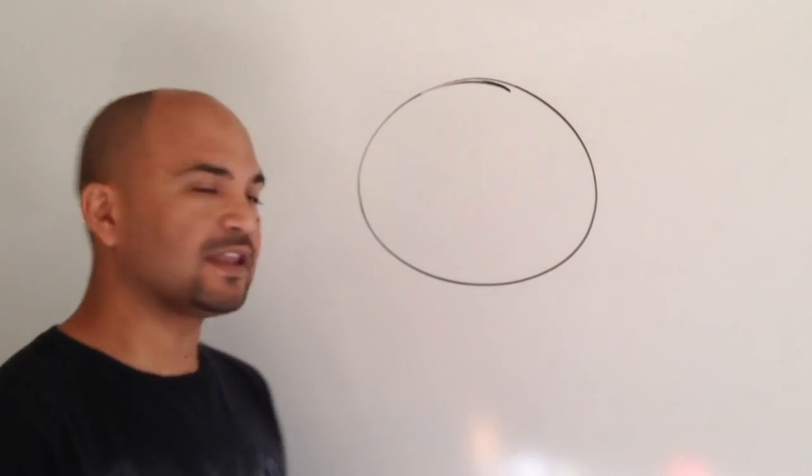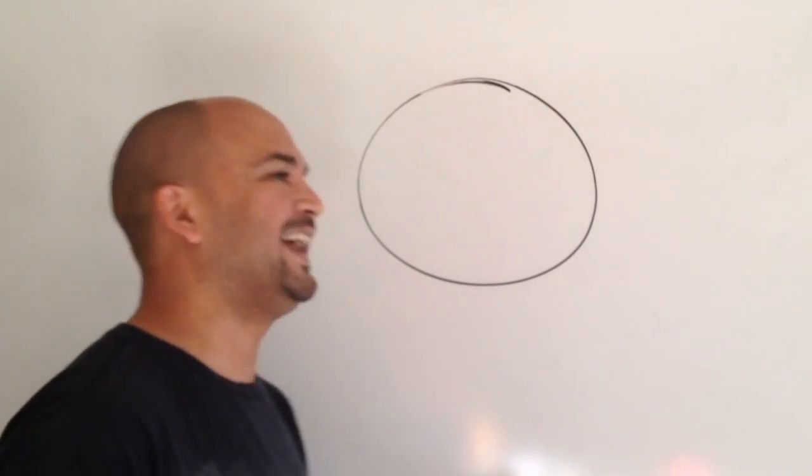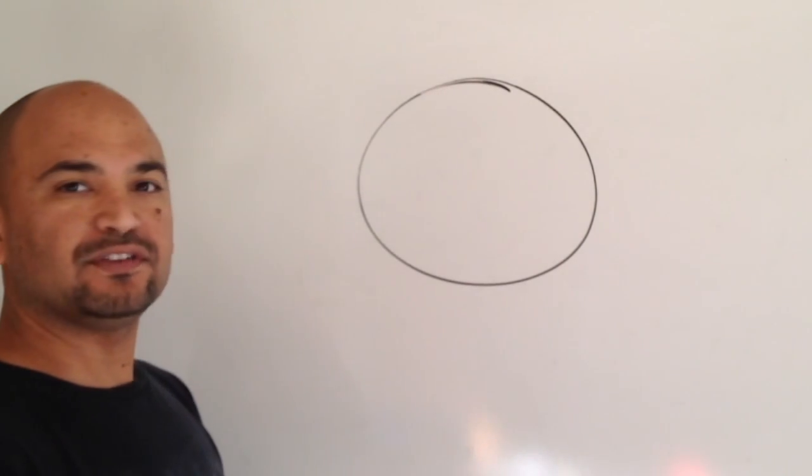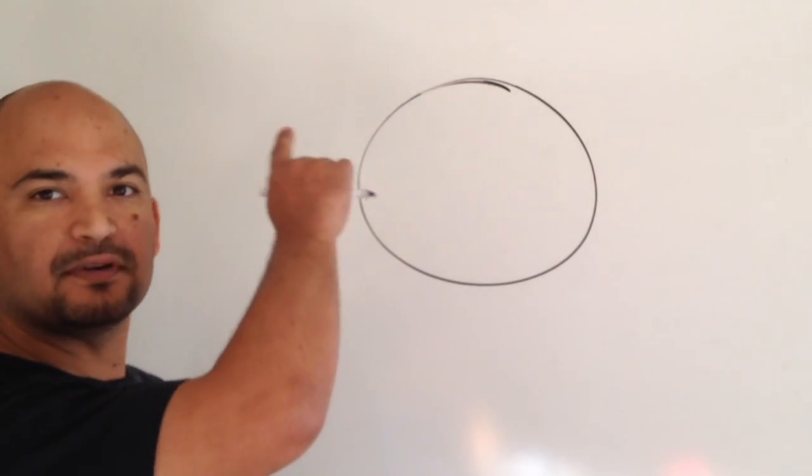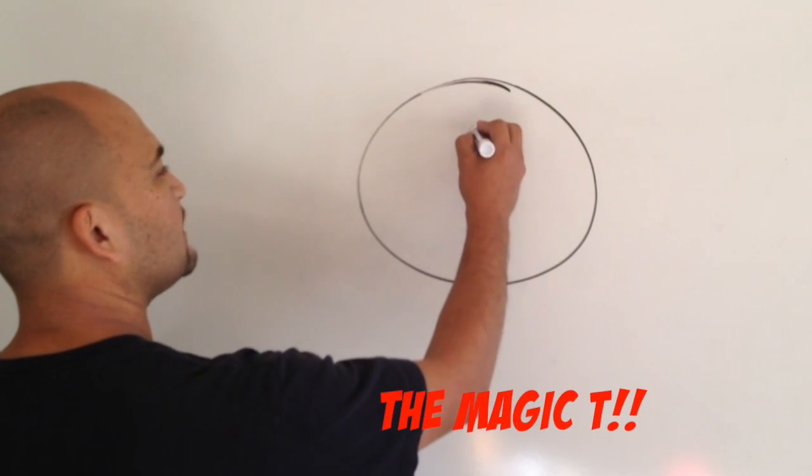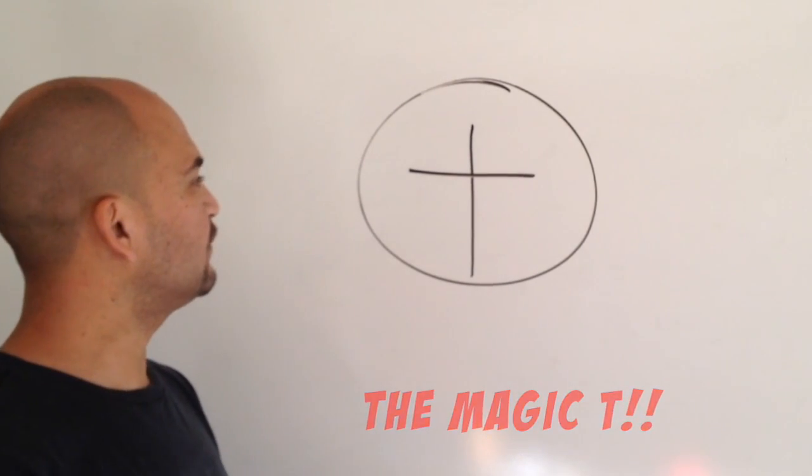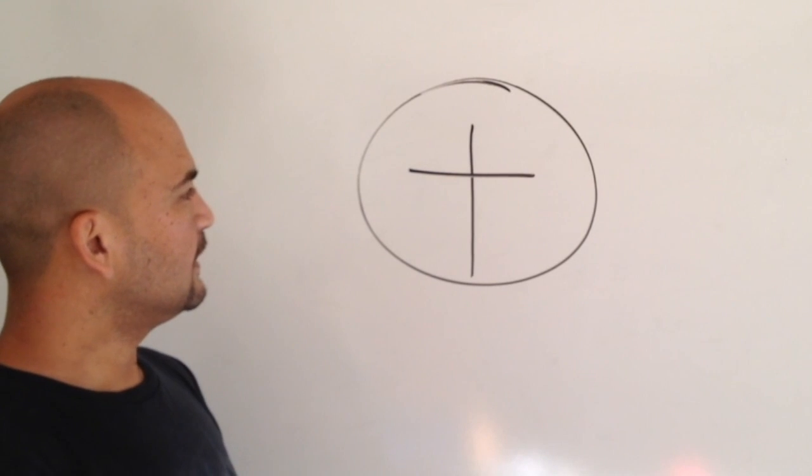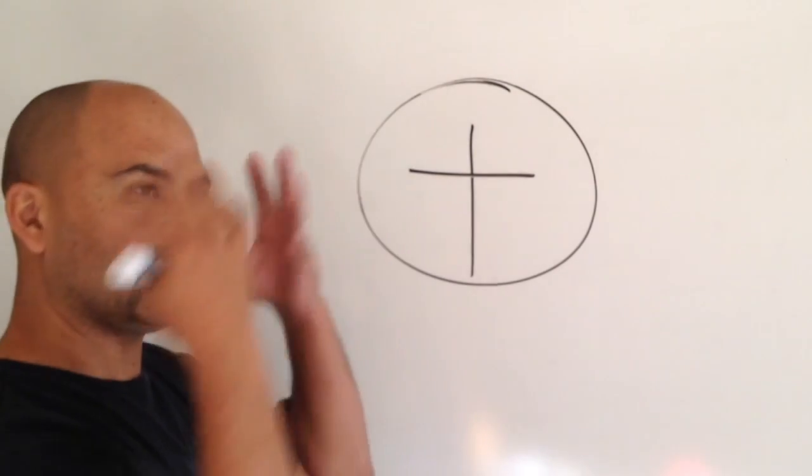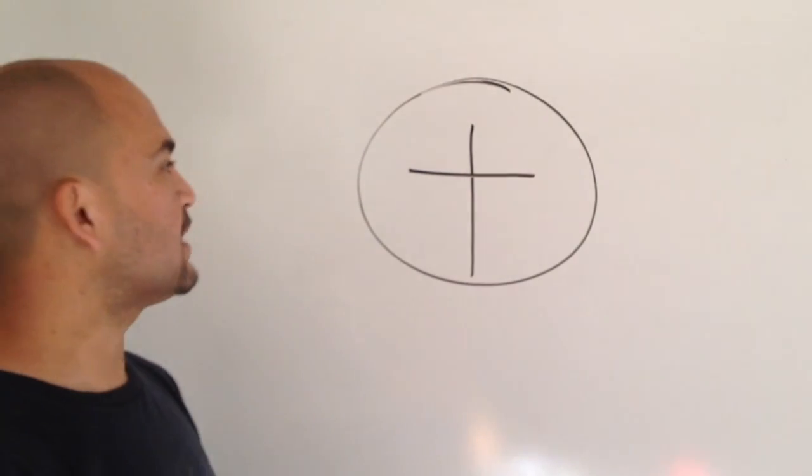And we're going to start off with a nice big circle. Back to basics. I love it. Alright, once you have your circle, we are going to enlist the help of the secret magic tea. That's right, the magic tea. You just pop that magic tea right in the middle of that circle. And now you know the magic tea is going to tell us where everything goes in the face and it's going to be perfect and magical.